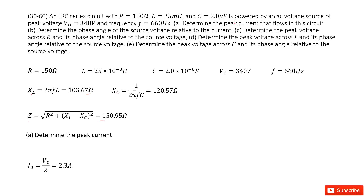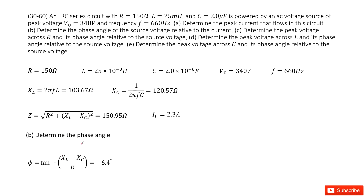First, determine the peak current. What we know is the peak voltage, and we need to determine the peak current. So we use I₀ = peak voltage divided by impedance Z, and we get it there. The second one finds the phase angle. We use φ = arctan((X_L - X_C) / R). Input X_L, X_C, and R to get the answer.